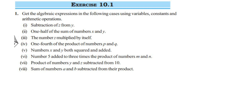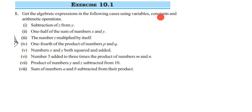Here's a question from Exercise 10.1, first question — algebraic expressions for Class 7. We have to get the algebraic expression using variables, constants, and arithmetic operations. Variables have different values and are mostly represented by letters like a, b, c or x, y, z in lowercase. Constants have a fixed value — they're normally a number. Arithmetic operations are addition, subtraction, multiplication, and division. An algebraic expression is a combination of all three.